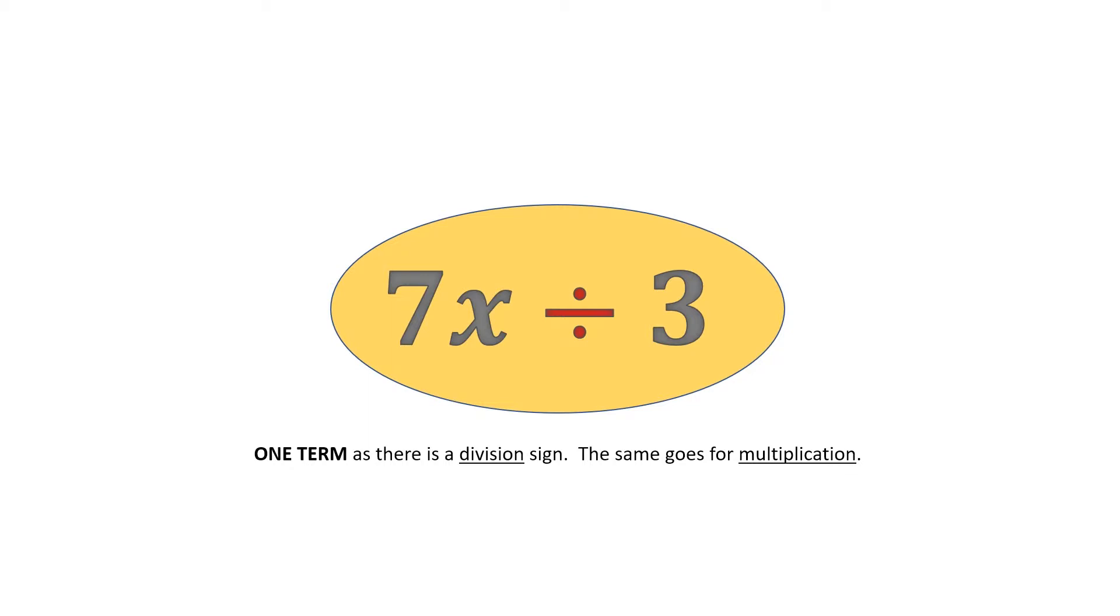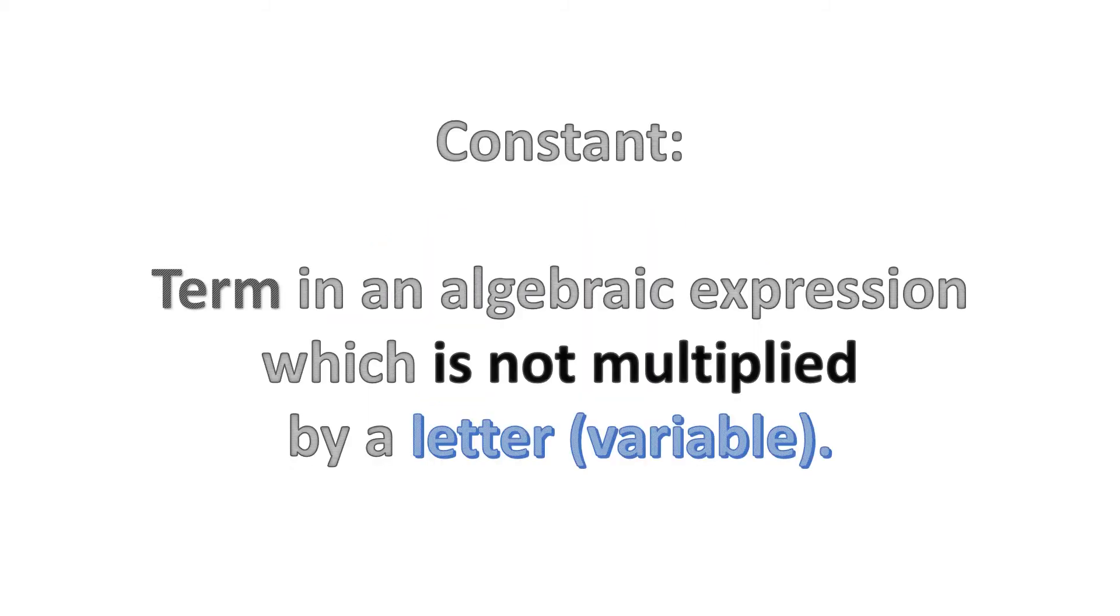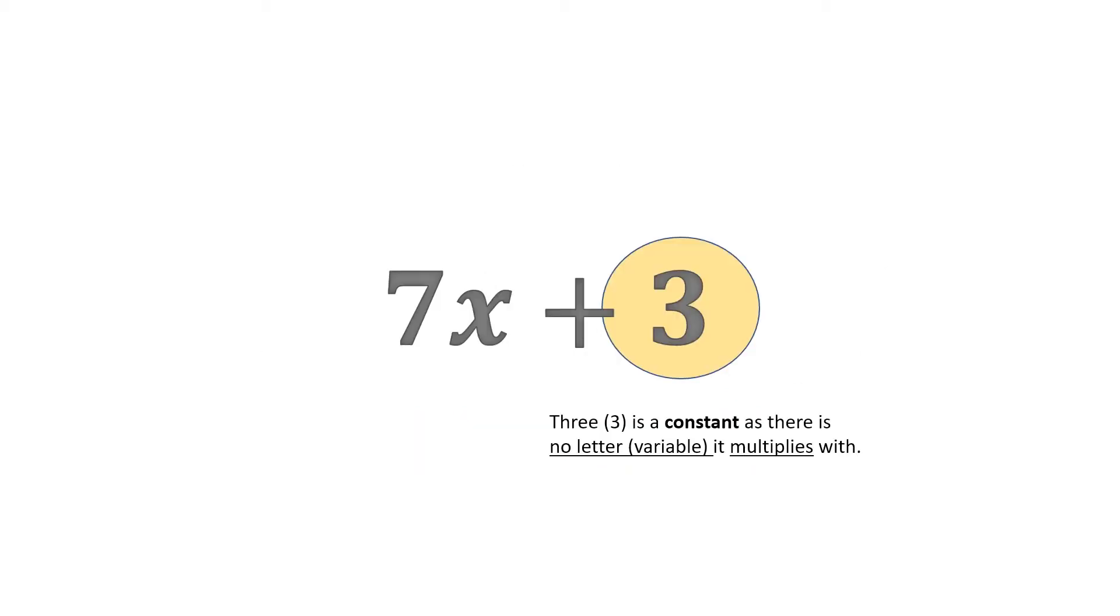Our next term is called a constant, and a constant is a term in an algebraic expression which is not multiplied by a letter, so it can be seen as only a number. In 7x plus 3, 3 is a constant, as there is no letter or variable it multiplies with. However,